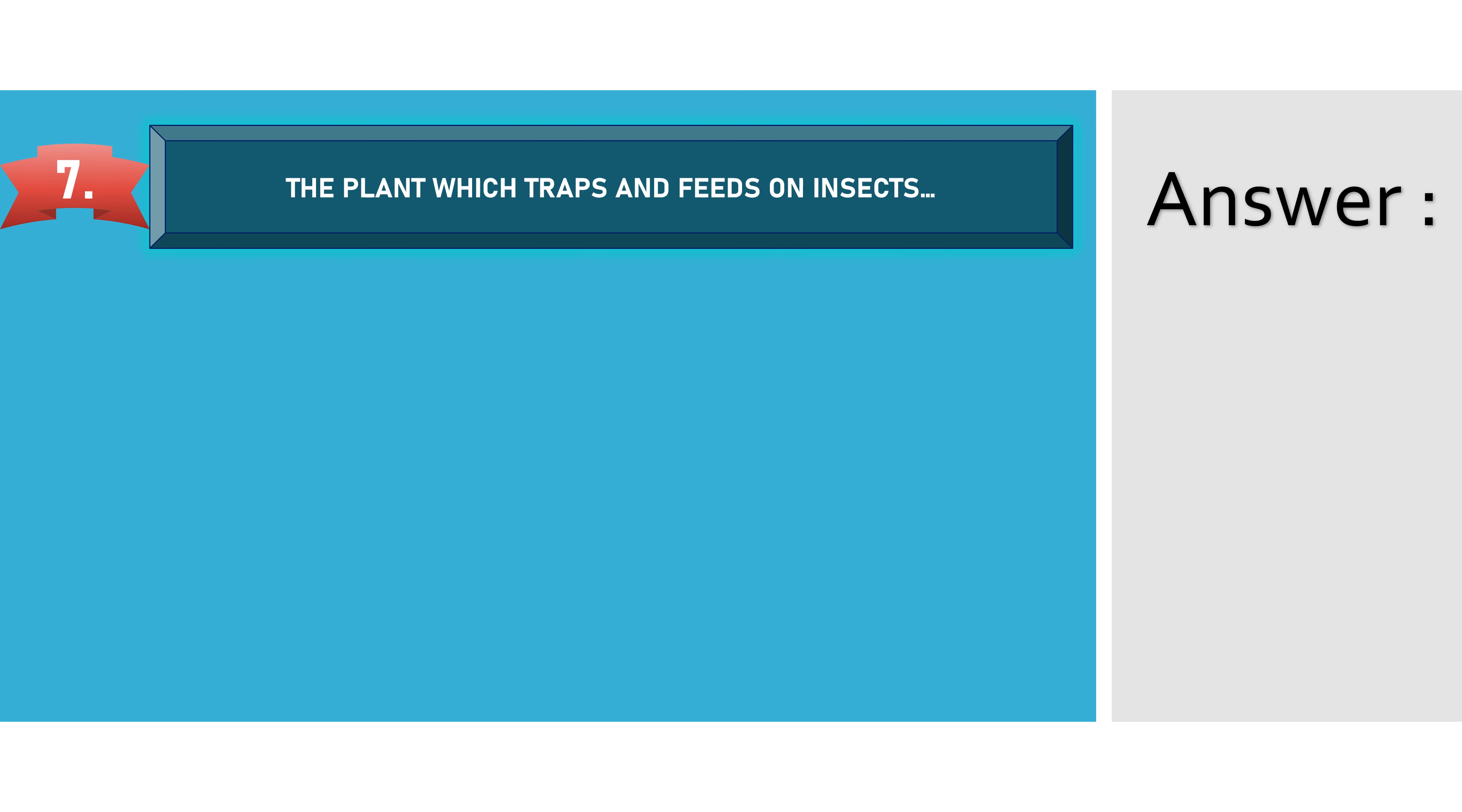The plant which traps and feeds on insects is... Option A: Mistletoe. Option B: Pitcher plant. Option C: Coral root. And Option D: Cascata. The answer is pitcher plant.